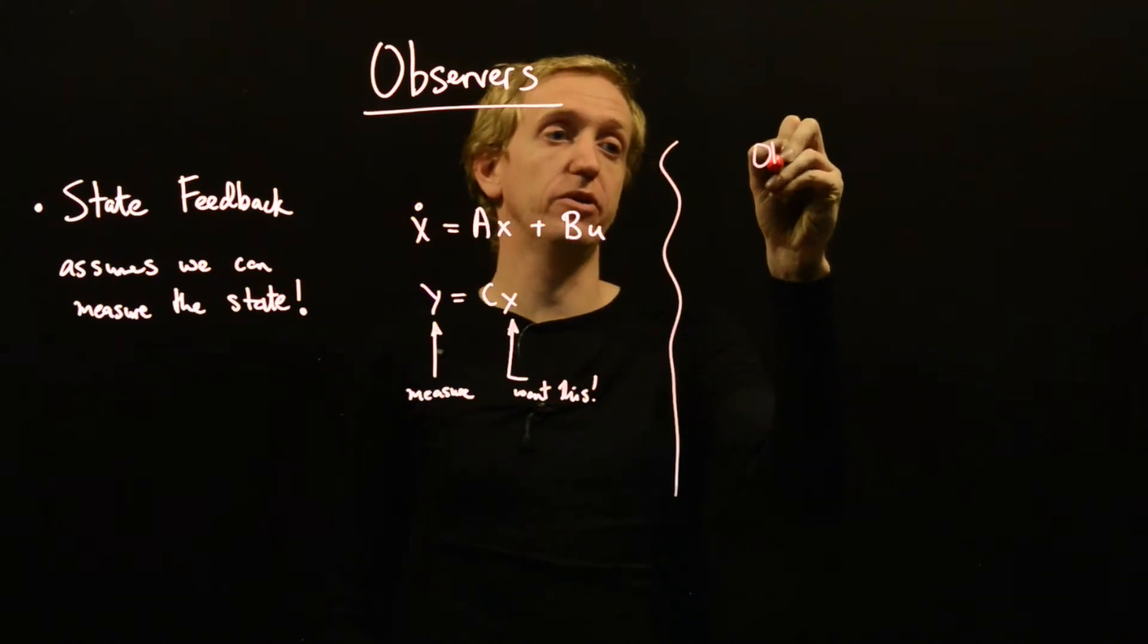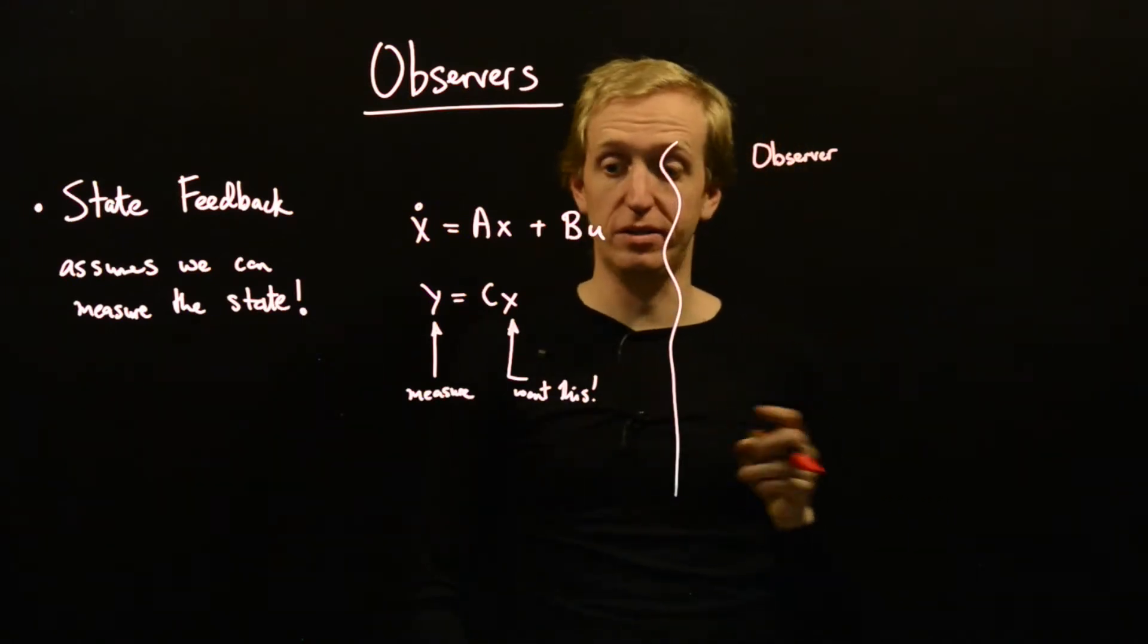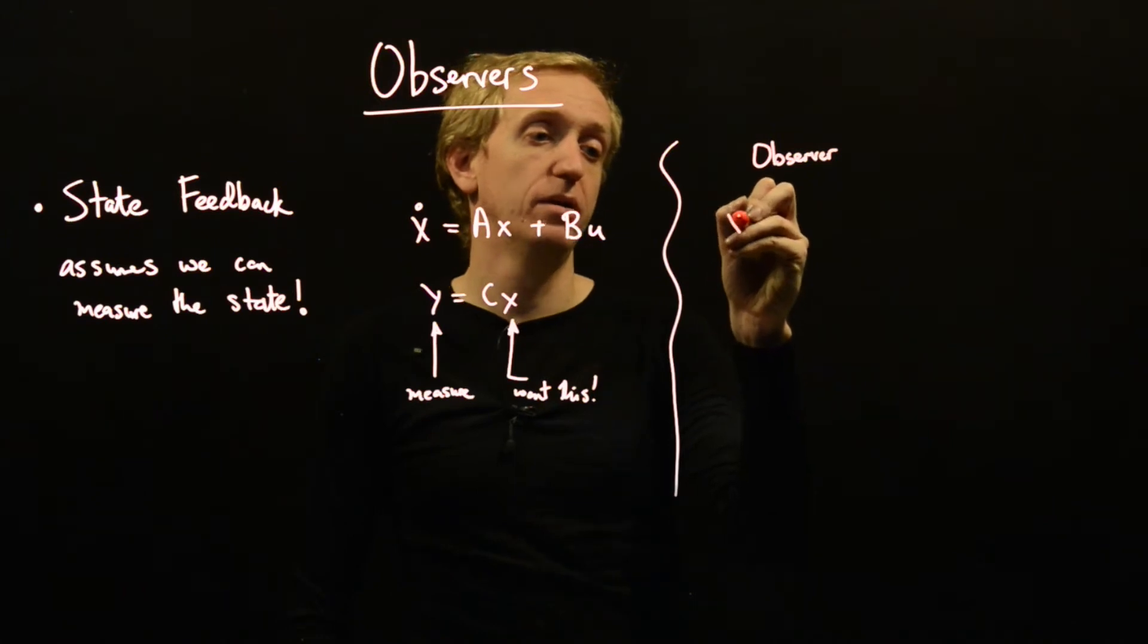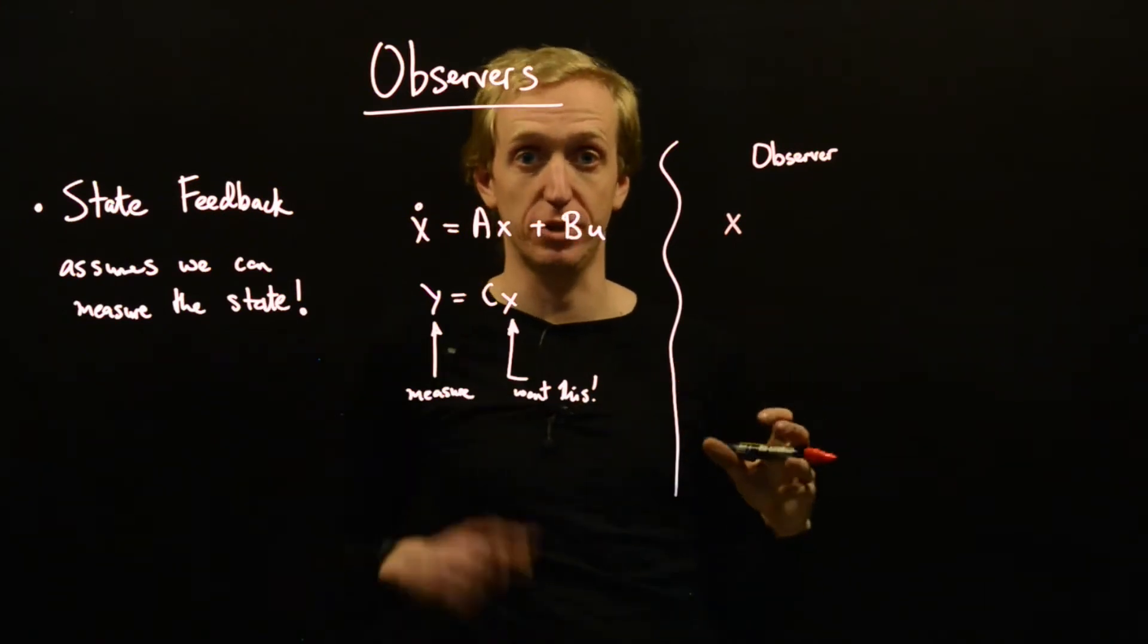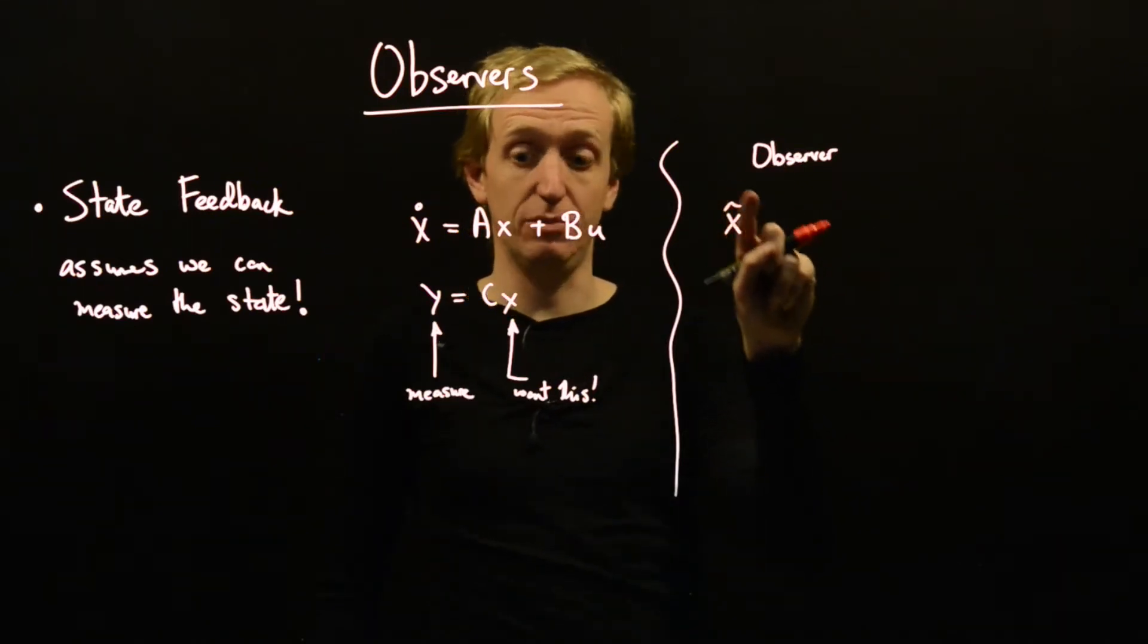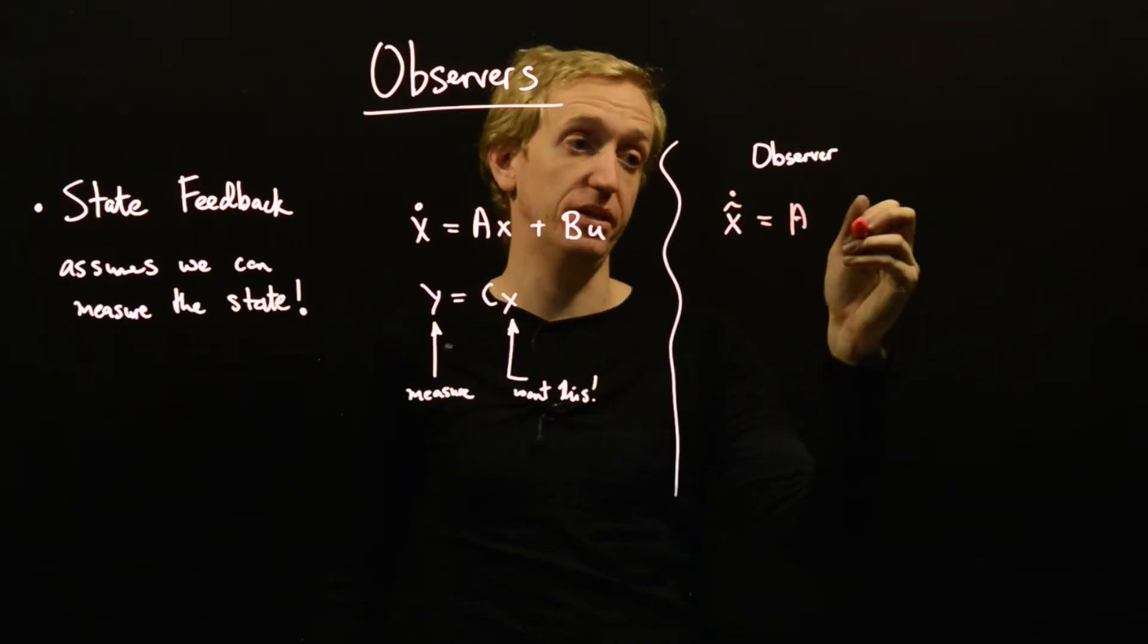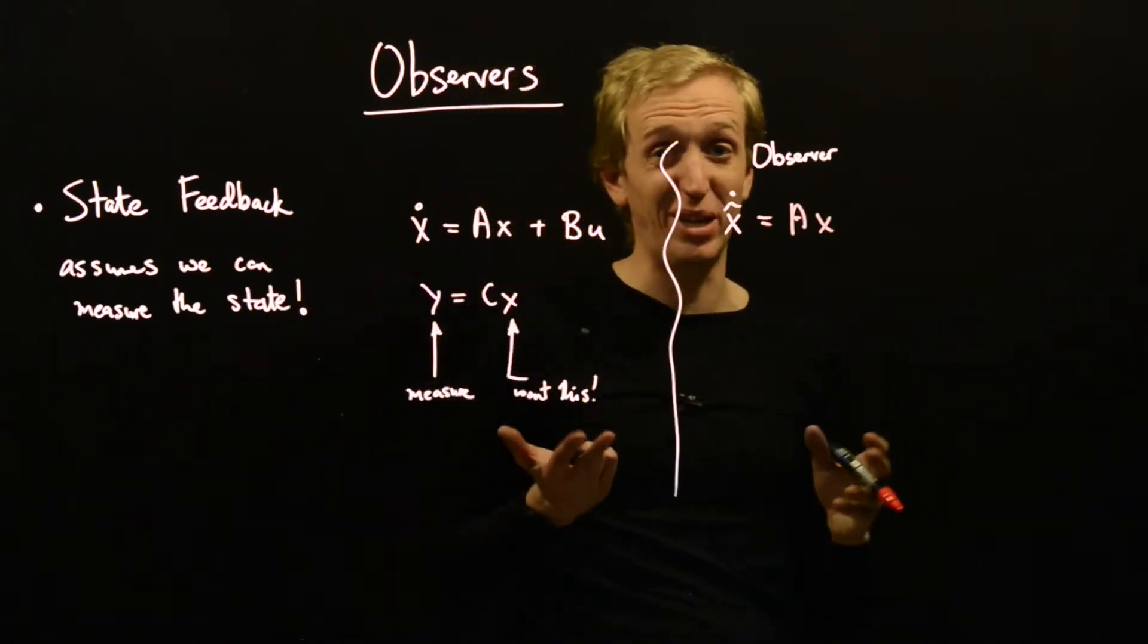Our state observer is also a feedback system that tries to update its estimate of the state based on the measurements that it takes. We introduce a new variable, x hat. This variable is internal to the observer, part of our control system, and this is our state estimate. The first thing we're going to do is build a copy of our system. This isn't the true system, it's a copy, and it also corresponds to what we think our system is.